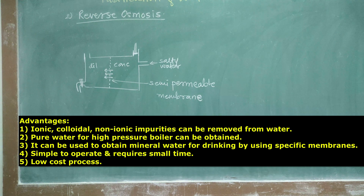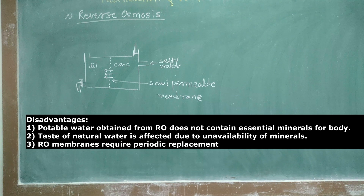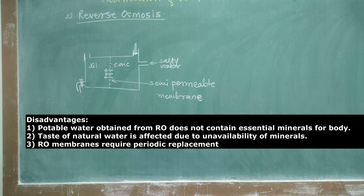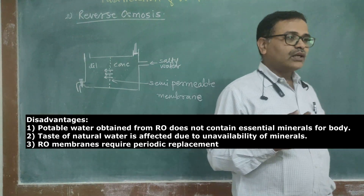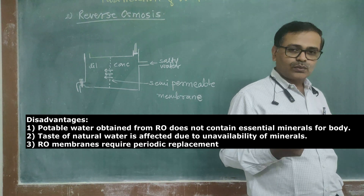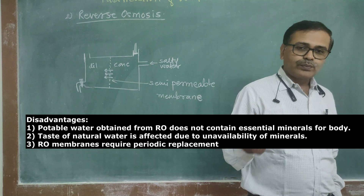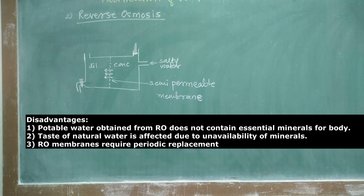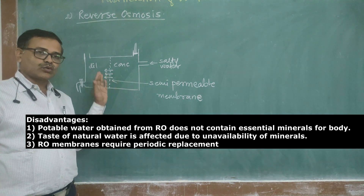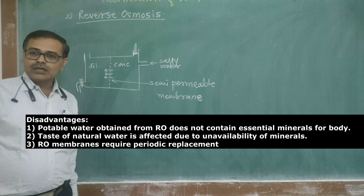There are certain disadvantages. Whatever water is obtained from RO does not contain essential minerals which are required for our body — this is one of the drawbacks, but it can be resolved by modifying the membranes. The taste of natural water is affected due to unavailability of minerals. When you go to different locations and take water from those places, you get a different taste of water — it is due to the presence of different amounts of minerals. Also, RO membranes require periodic replacement after some period of use.